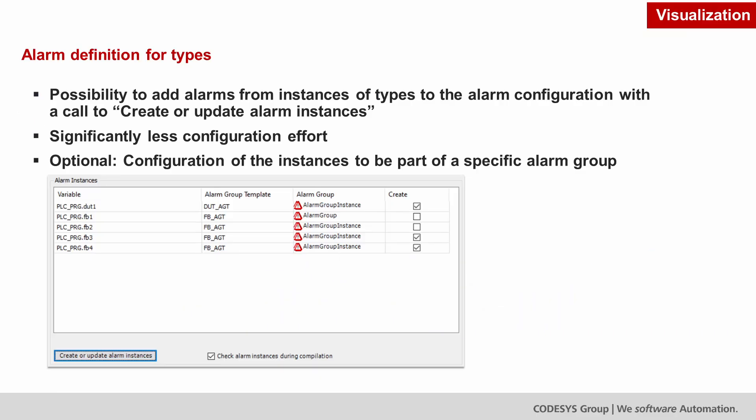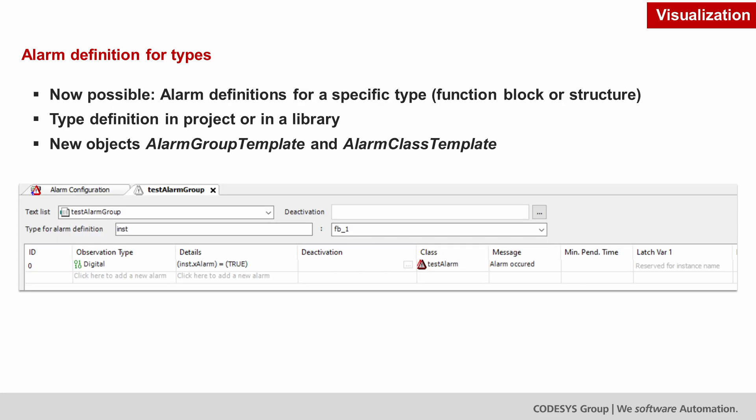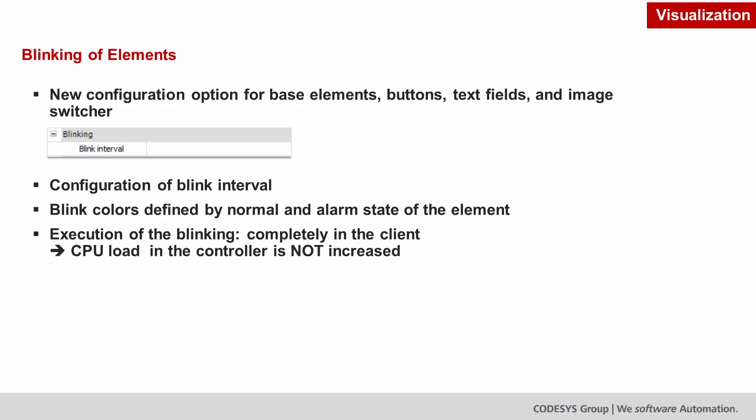All alarms in an alarm configuration can now also be generated for instances of function blocks. The new alarm group template allows you to create alarm definitions for types. Visualization elements can be configured with a new option so that they flash with a predefined interval. Text lists can now also be used without visualization in the visualization support add-on component.